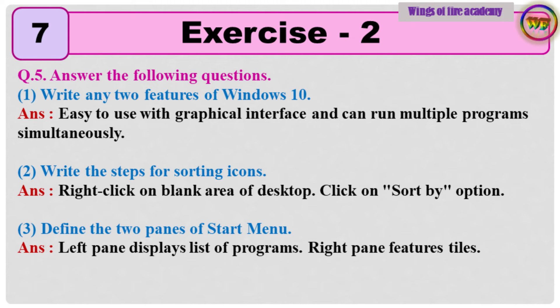Question number 5. Answer the following questions. Question 1: Write any two features of Windows 10. Answer: Easy to use with graphical interface and can run multiple programs simultaneously. Question 2: Write the steps for sorting icons. Answer: Right click on blank area of desktop, then click on sort by option. Question 3: Define the two panes of start menu. Answer: Left pane displays list of programs. Right pane features tiles.